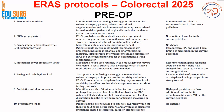Nausea and vomiting profile assessment is a very important component — strongly recommended — and definitely improves outcomes if well controlled. There are five different drugs recommended in the guideline: aprepitant, ramosetron, granisetron, dexamethasone, and ondansetron.